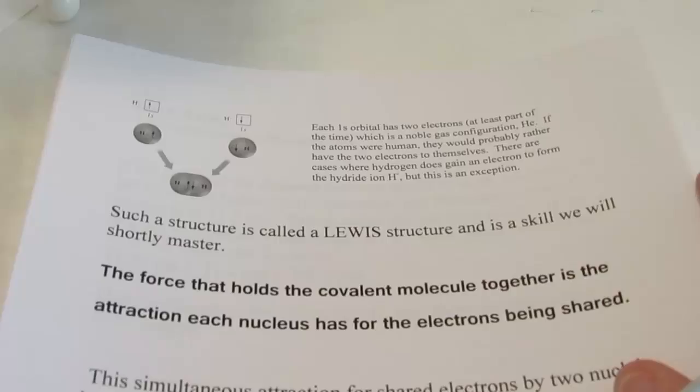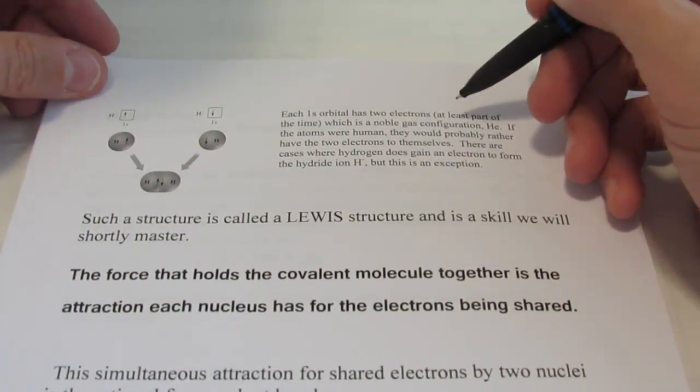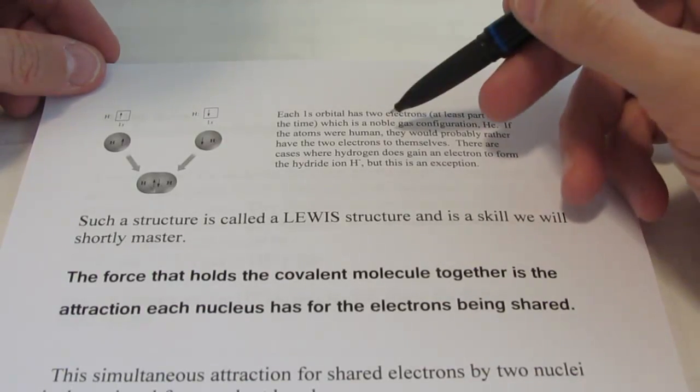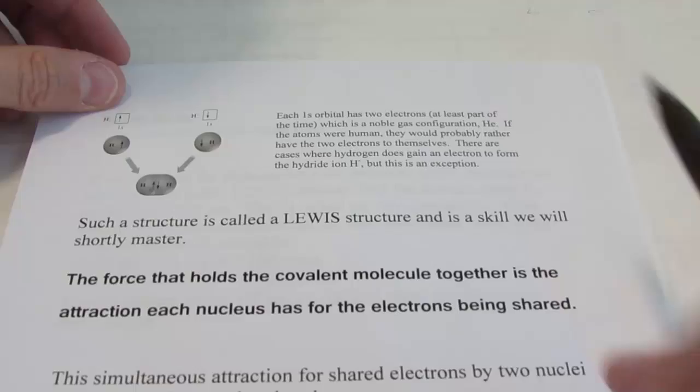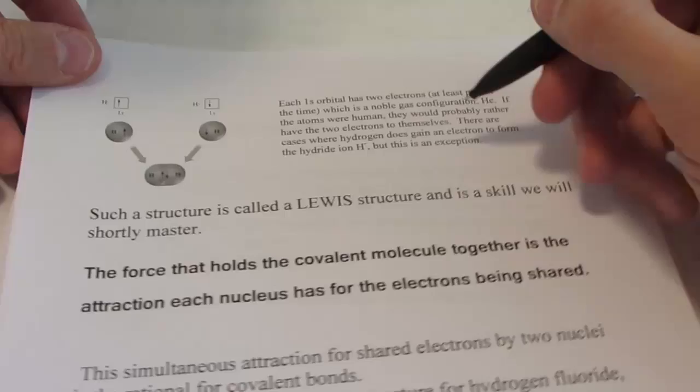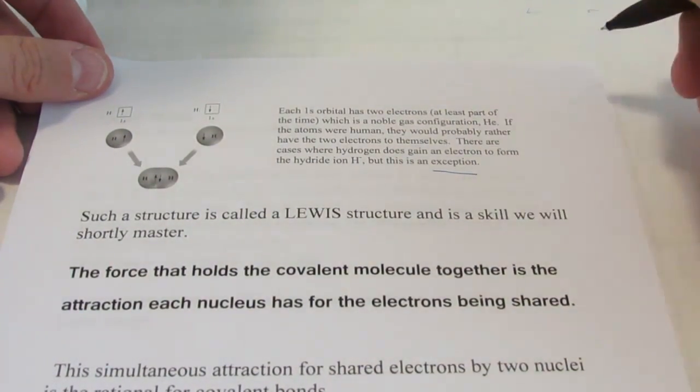Two valence electrons is the noble gas configuration for helium, which is a stable configuration. So by sharing a pair of electrons, once again, one electron from each atom, we can obtain that stable noble gas configuration. This illustration, let's show it a bit better.